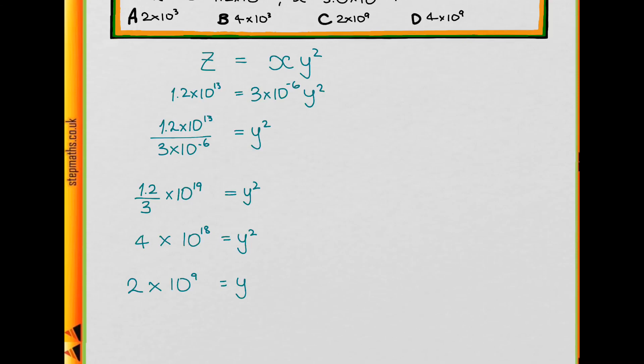Let's carry on. We need to square root this to find y, and when we square root 4 times 10 to the power of 18, we square root the 4 and get 2, and we square root the 10 to the 18 and get 10 to the 9, because 10 to the 9 squared would be 10 to the 18.